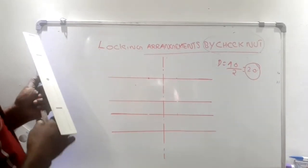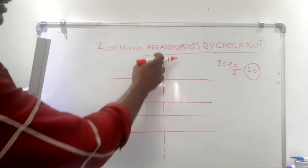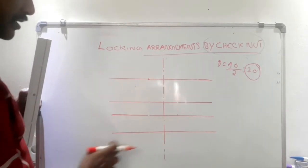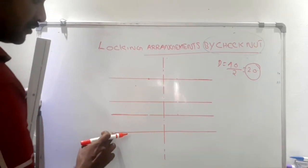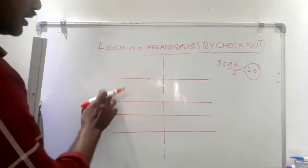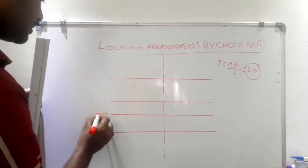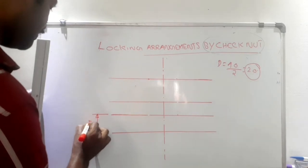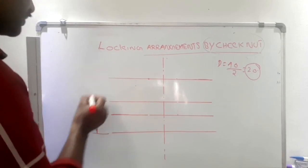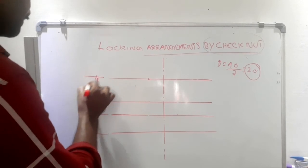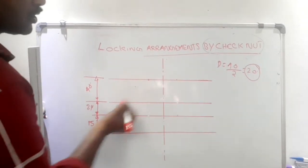Now we have to draw the locking arrangement using our data. First, draw a center line and a reference line. From that reference line, draw three more horizontal lines, keeping the following distances: plate thickness is 15 mm, the gap above is 24 mm (lock nut height), and then 40 mm (normal nut height). By keeping these distances, draw three more horizontal lines.